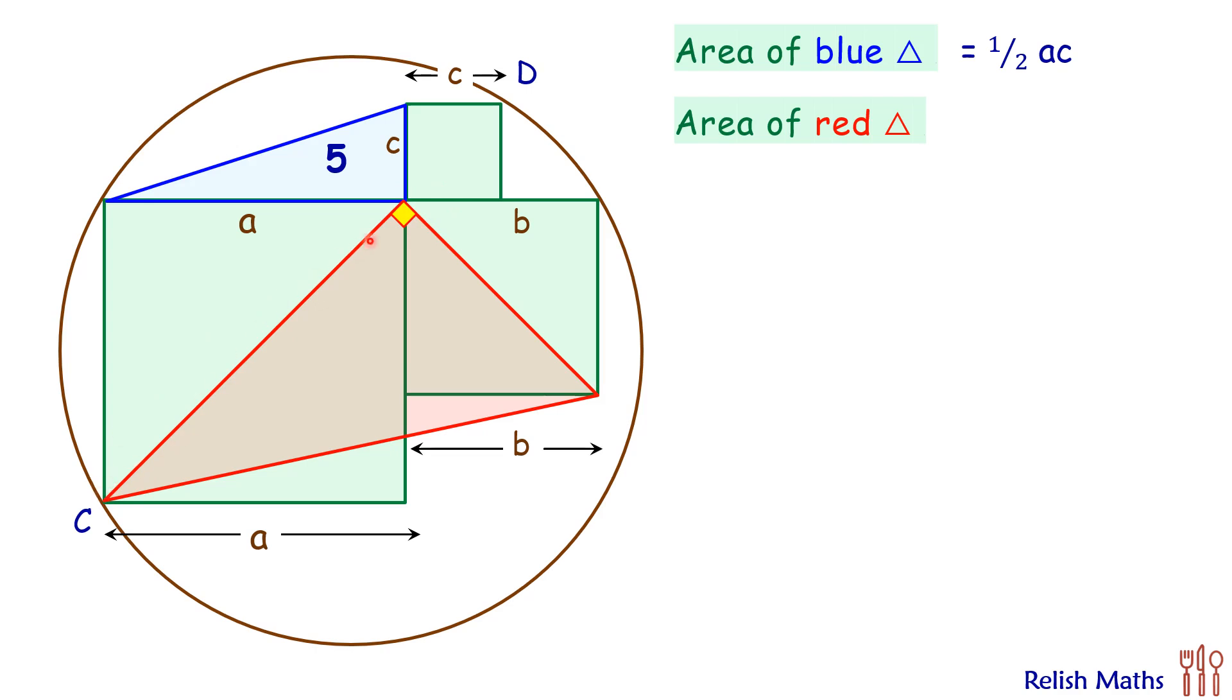Now here this base length is length of diagonal root 2a and this height is root 2b. So area of red triangle is half of root 2a times root 2b which is a times b.